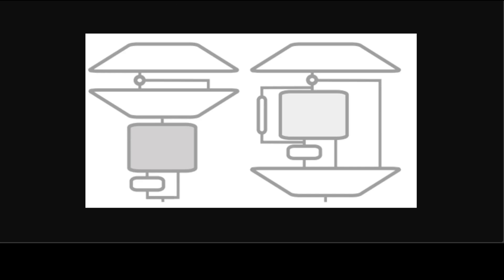Looking at the architecture of the XLSTM block, it should non-linearly summarize the past in a high-dimensional space to better separate different histories or contexts. Separating histories is a prerequisite to correctly predict the next sequence element, such as the next token. For this, they use Cover's theorem, which states that in a higher-dimensional space, non-linearly embedded patterns can more likely be linearly separated than in the original space. On the left is a residual sLSTM block with post-up projection, like a transformer — the input is fed into an sLSTM with an optional convolution followed by a gated MLP.